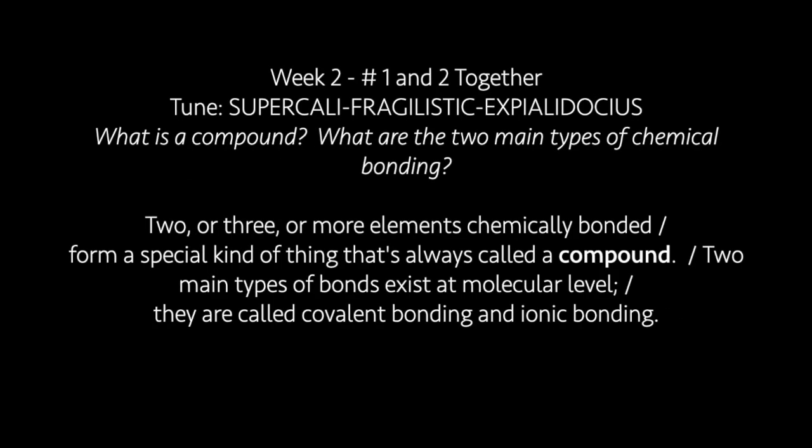Two or three or more elements chemically bonded form a special kind of thing that's always called a compound. Two main types of bonds exist at molecular level. They are called covalent bonding and ionic bonding.